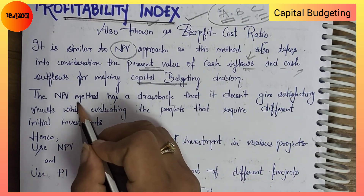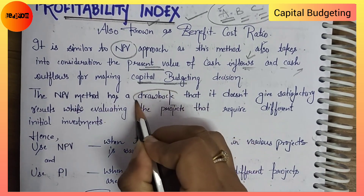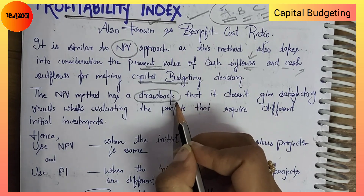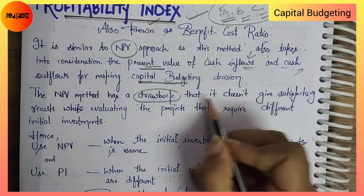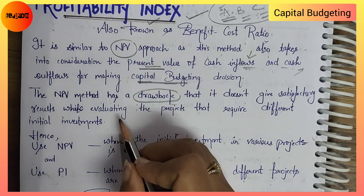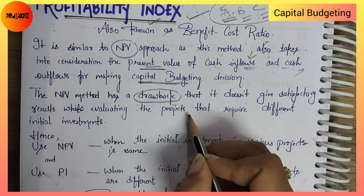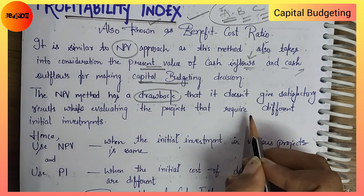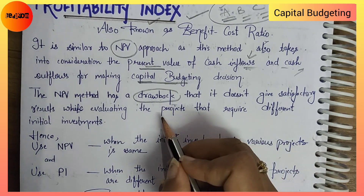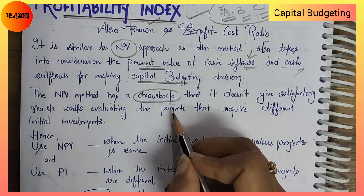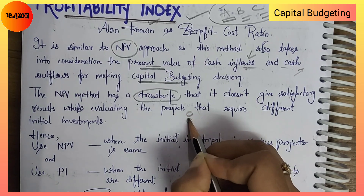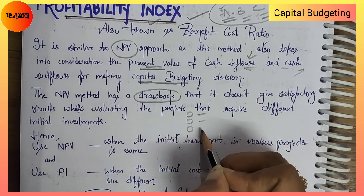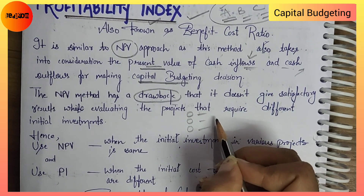The NPV method has a drawback. NPV method does not give satisfactory results while evaluating projects that require different initial investments. This is a disadvantage — the NPV method does not work well where the initial investment amounts involved in different projects are different.